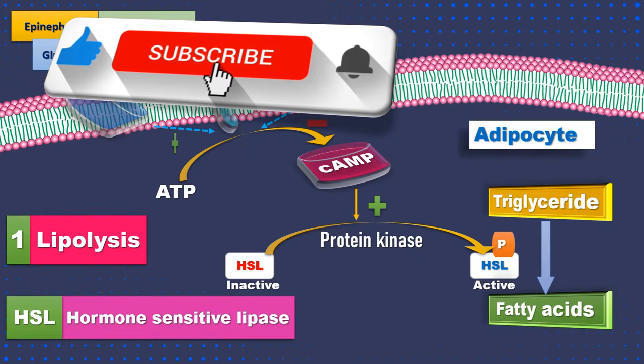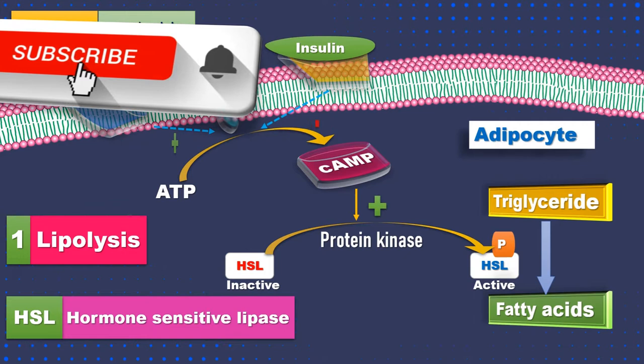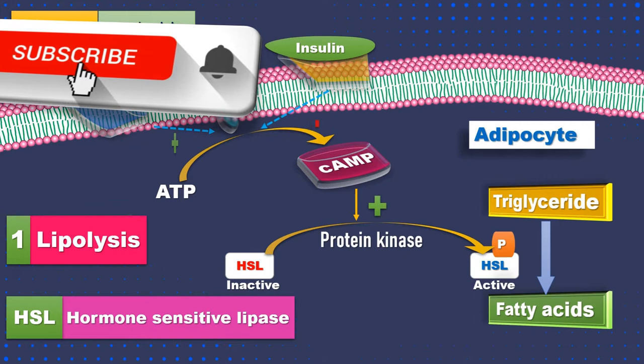Once fatty acids are formed they are transported to tissues through the circulation with the help of albumin. In the next video we are going to study activation of fatty acids in the cytoplasm.